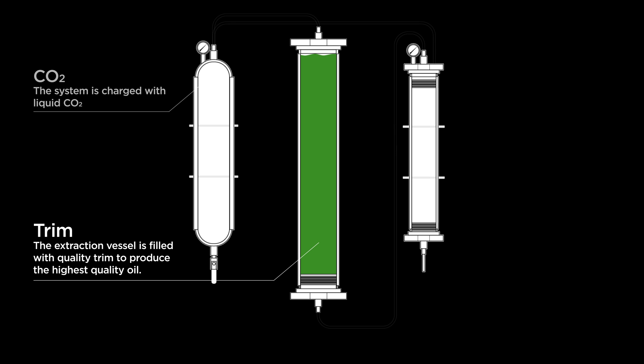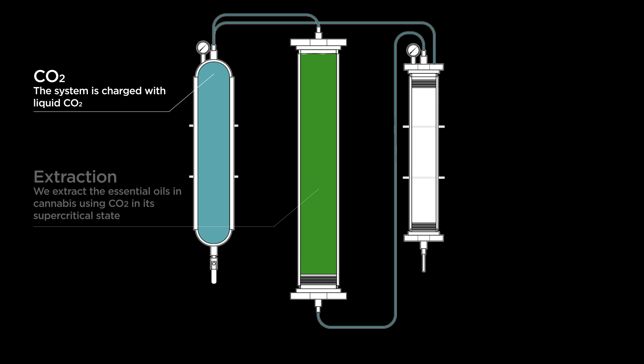The system is then charged with liquid CO2 until a desired temperature and pressure is reached within the extraction vessel. Once the CO2 is set to the correct temperature and pressure, the system is able to extract the essential oils from the TRIM.